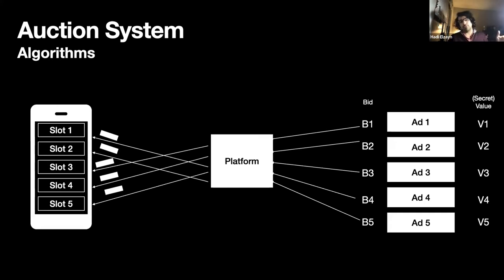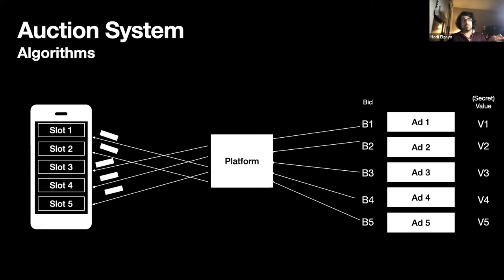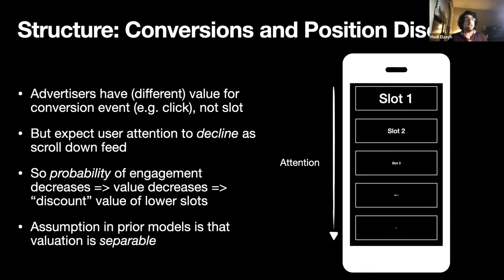Just sort of schematically, imagine I have a bunch of slots and then I have a bunch of ads — I've got to somehow match them. There are bids that the advertisers give me, and then the advertisers have some secret values. That's why you can think of it as a sort of two-sided matching.